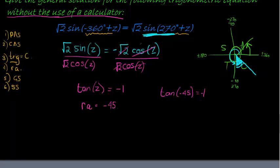And then my general solution is very simple. I love doing tan because it's so easy. My general solution is that for tan, z is equal to the reference angle which is negative 45 degrees plus 180 times k, where k is an element of Z.